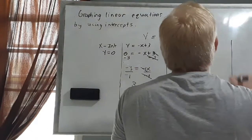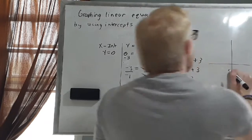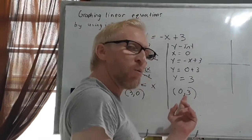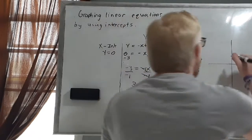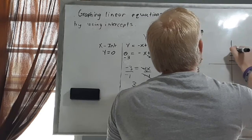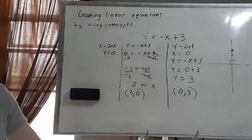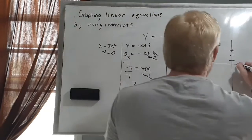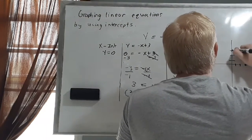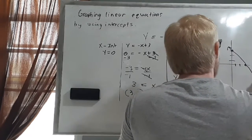Now I'm going to graph that. For the ordered pair (0, 3): since x is 0, it starts at the origin, and since the y-coordinate is 3 and positive, I go three spaces up — 1, 2, and 3. For the other ordered pair (3, 0): x is 3, and y is 0, so I don't move in y — I plot it right there. Then I connect the points, and that is it for this exercise.